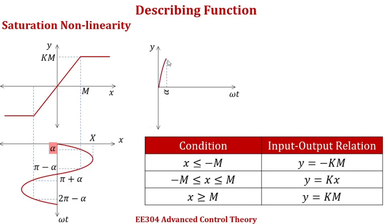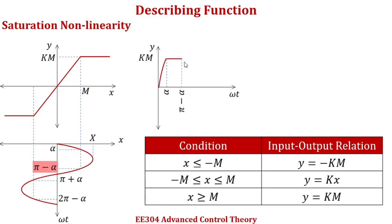So we will get a sinusoidal portion up till angle omega t equals alpha. Now for the next range from alpha to pi minus alpha, the value of x is greater than m. If x goes greater than m, then the value of y gets clipped at km. So that clipping is evident in the output waveform.